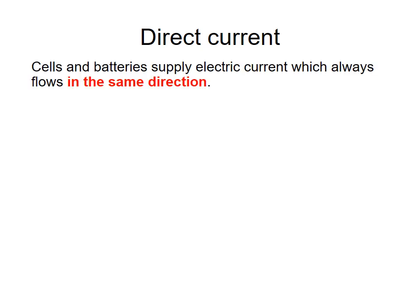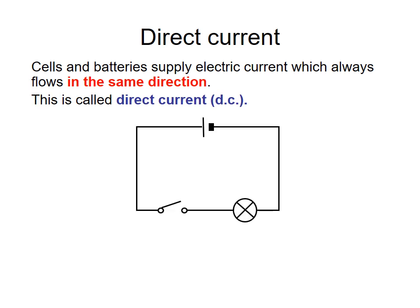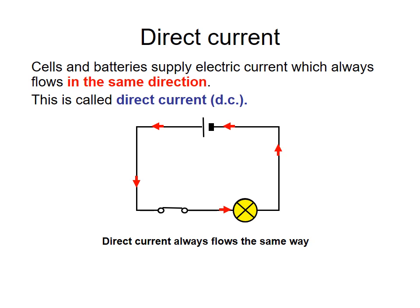The first thing we'll look at is different types of current. Current is the movement of electricity. The first kind is direct current. Cells and batteries supply electrical current which always flows in the same direction. This is called direct current, also abbreviated to DC. Here's an example of a circuit where you can see from the arrows that the current is always flowing in the same direction.